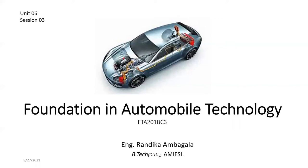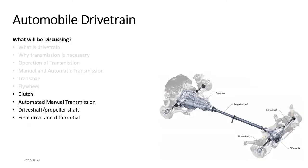Today we're starting session number three for Foundation Automobile Technology, Unit 6. So far we've discussed the drivetrain — starting from what the drivetrain is, through manual and automatic transmissions, and the flywheel. Today we're going to discuss the remaining components: the clutch, the propeller shaft or drive shaft, the final drive, the differential, and also automated manual transmission.